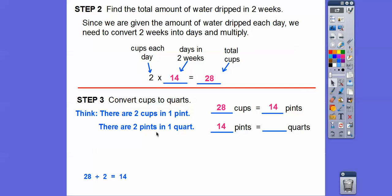If we have 14 pints, remember there's two pints for every quart. So we're going to take the 14 and divide that again by two, and that's going to give us seven quarts total. John's leak drips seven quarts of water in two weeks.